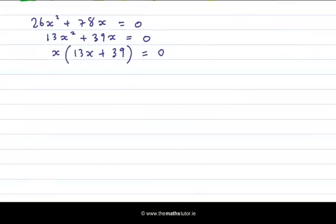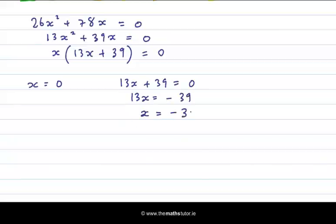The first factor equal to 0, that's x is equal to 0. And the second factor equal to 0 is 13x plus 39, which gives me that 13x is equal to minus 39. And dividing across by 13, I get that x is equal to minus 39 over 13, so x is equal to minus 3.